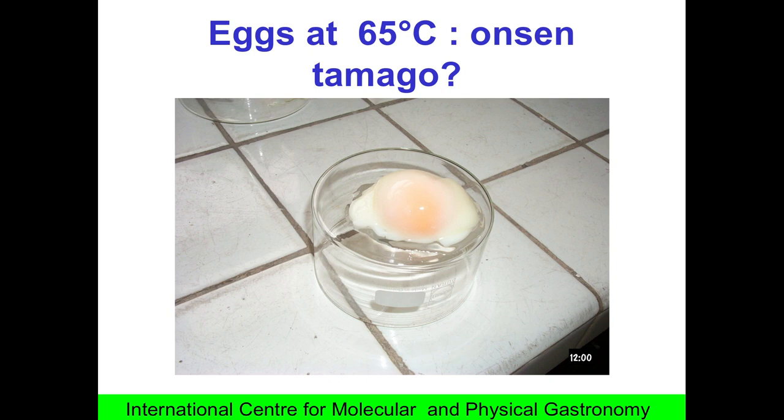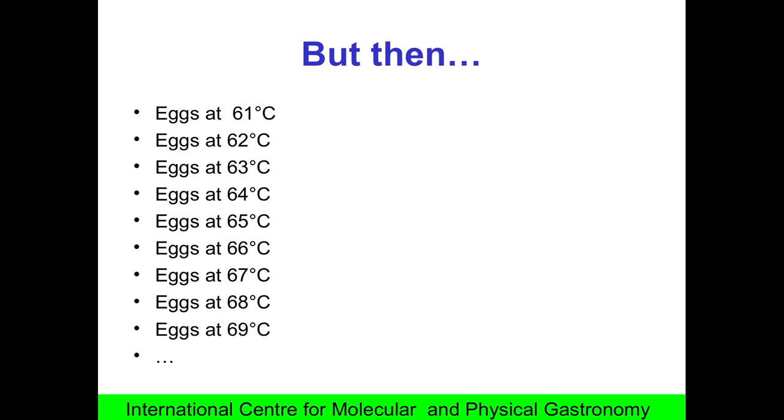Well, I'm not convinced because in hot sources, for sure, you can make something. But what is it exactly? Because indeed, you can make eggs at 61, 62, 63, 64, and so on. And they are all different, as you will see now.